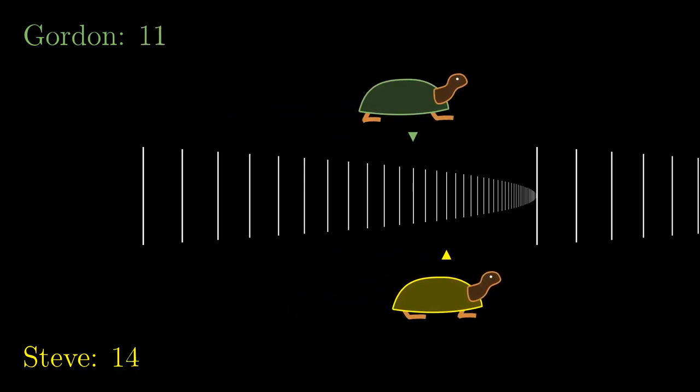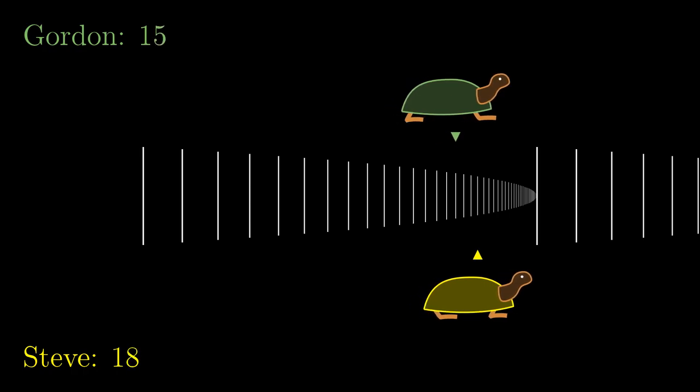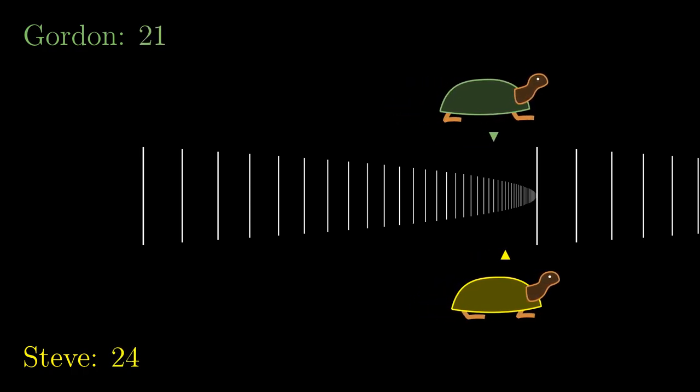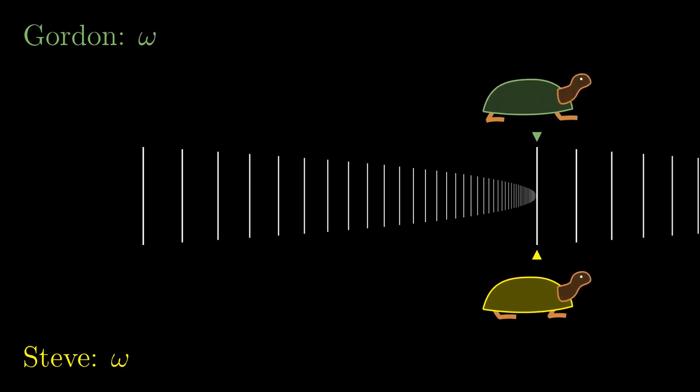Even though Gordon is 3 steps behind Steve all the time, both of them are approaching the same limit ordinal, that is omega. So at the limit step, both turtles jump to index omega. In Steve's case, we can interpret omega as 3 plus omega because he started on index 3, but the current index is the same.